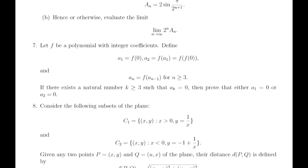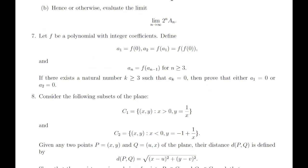It says that you have a polynomial f with integer coefficients and you define a sequence aₙ such that a1 is the constant term of the polynomial, that is f(0), and a2 is f(a1), that is f(f(0)), and aₙ is recursively defined as f(aₙ₋₁) for n ≥ 3. Now they are saying that if there exists a natural number k ≥ 3 such that the kth term of the sequence is 0, then we have to prove that either a1 or a2 will be 0.